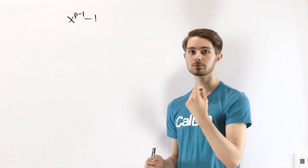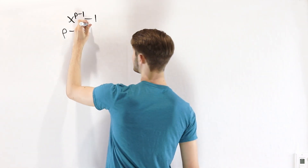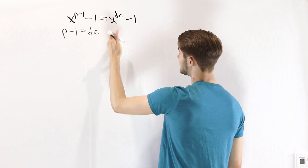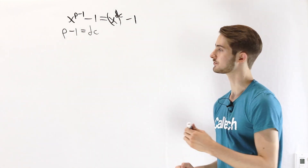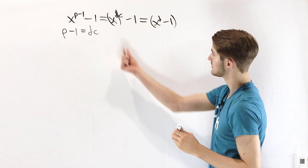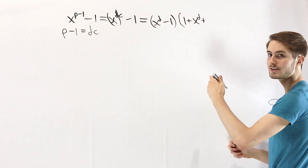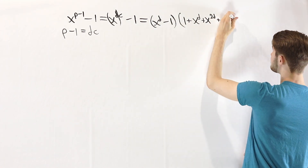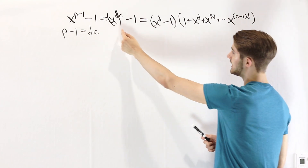Now we know that if p is an odd prime number — any prime number greater than 2 — we can write p minus 1 as a product of two numbers, d and c. So we can say this equals x to the power of dc minus 1. We can also write x to the dc as x to the d, all to the power of c. Using the difference of powers formula, we can factor x to the d to the c minus 1 as x to the d minus 1, times 1 plus x to the d plus x to the 2d plus x to the 3d, and so on, all the way up to x to the (c minus 1)d. This is just factoring in terms of x to the d as our variable.